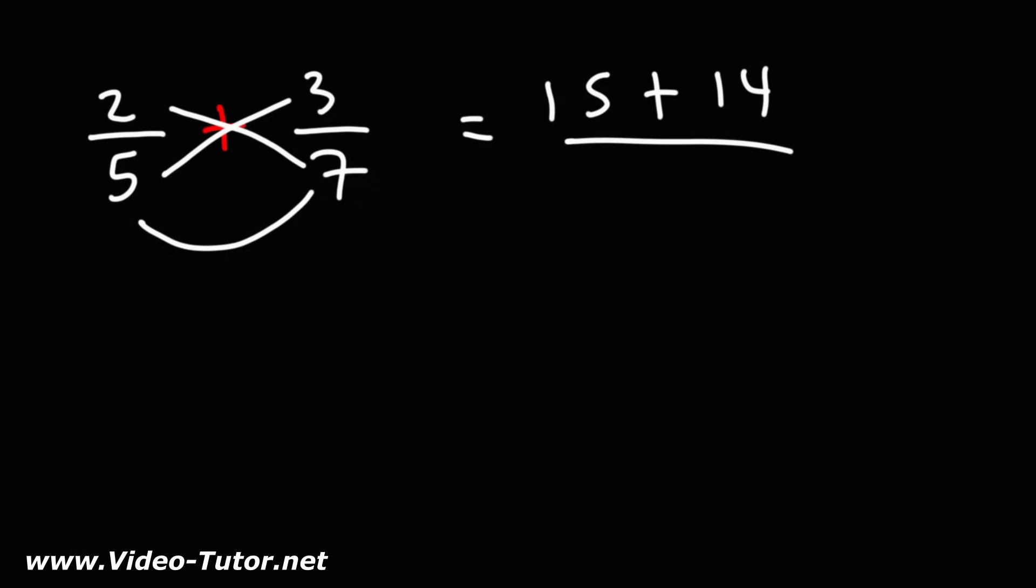And then we're going to multiply these two numbers, 5 times 7, which is 35. 15 plus 14 is 29, and so the answer is going to be 29 over 35.